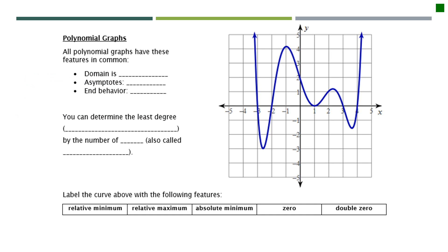We are going to talk about polynomial graphs. All polynomial graphs have certain features in common. The first thing is that the domain will always be all real numbers, so it will continue going all the way left and all the way right forever and ever. There will never be any asymptotes, vertical or horizontal, and the end behavior will always use infinity.